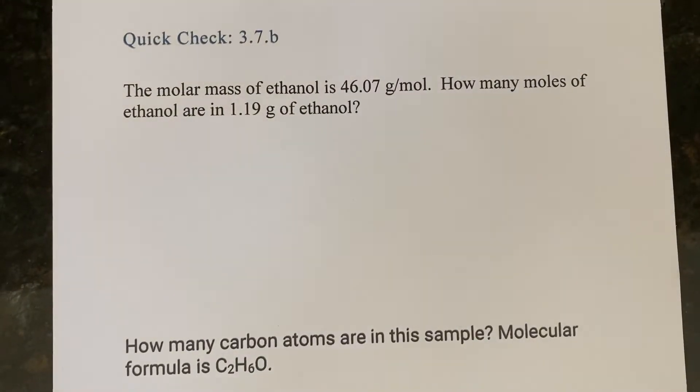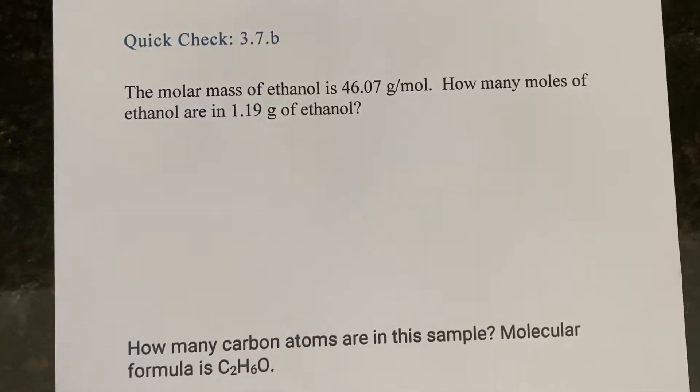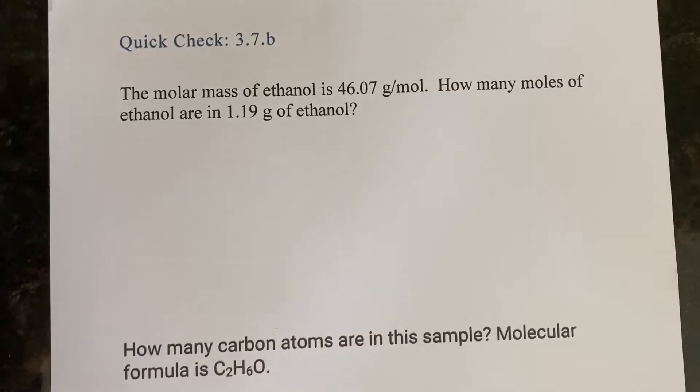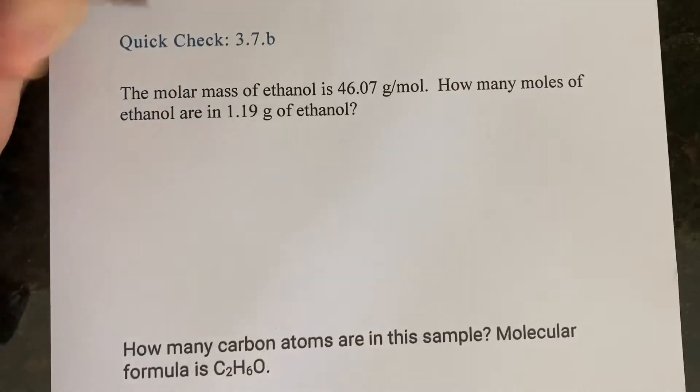We're going to do a quick check 3.7 point B. It says the molar mass of ethanol is 46.07 grams per mole. How many moles of ethanol are in 1.9 grams of ethanol? So we always want to turn grams into moles by dividing by molar mass.